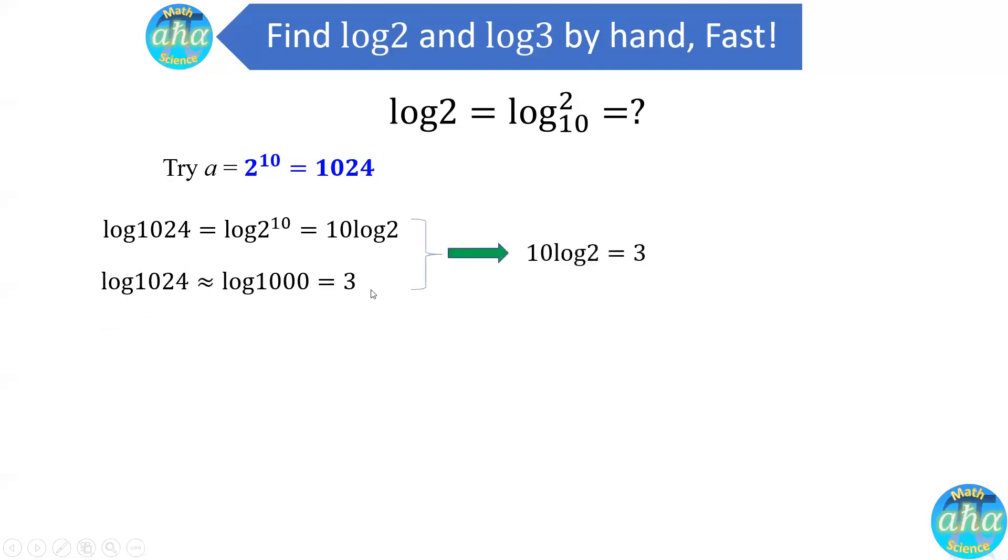And log of 1,000, we already know, is just equal to 3. Now we can equalize these two, and we find 10 log of 2 equal to 3. Therefore, log of 2 is equal to 3 divided by 10, or 0.3. And let's look at what's the exact answer of log of 2. Well, the exact answer for log of 2 is 0.3010. So the difference between 0.3, which is our approximate answer, and the exact answer is only off by 0.001. It's very, very close. And the method is also very fast, as you can see.